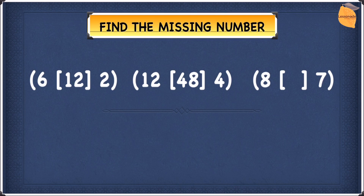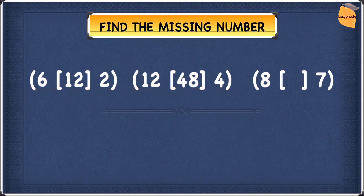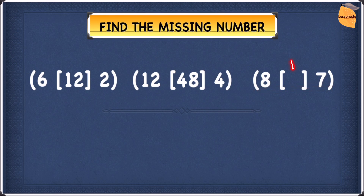In this type of question, the numbers in the third pair must be related to each other just like the numbers in the first two pairs. In other words, you'll have to do something to the two outside numbers to get the middle number, and once you've found that out, you're going to see whether that works for the second pair, and if it does, you can apply it to the third pair to find your answer.